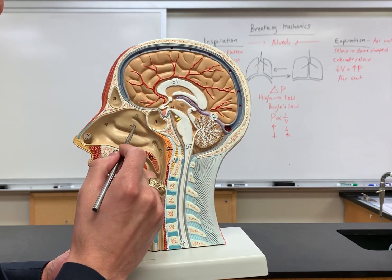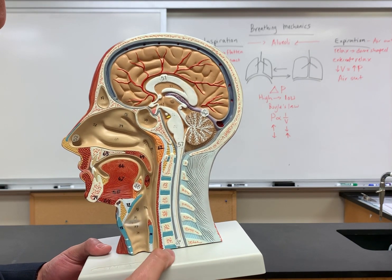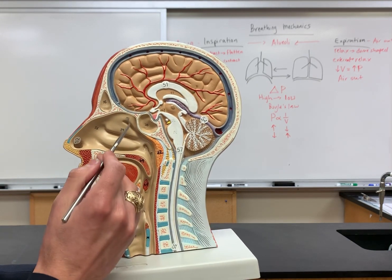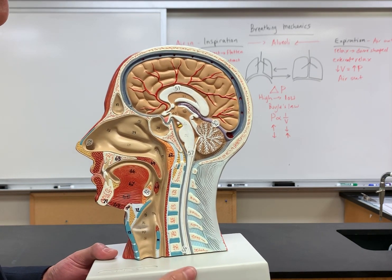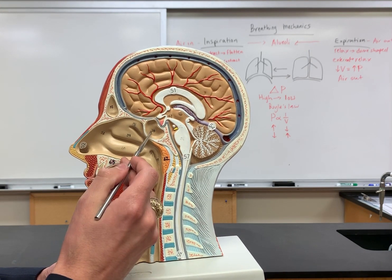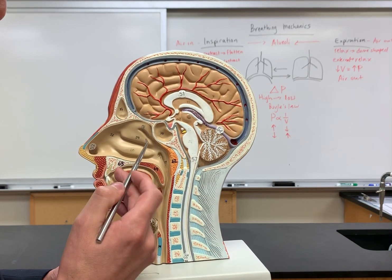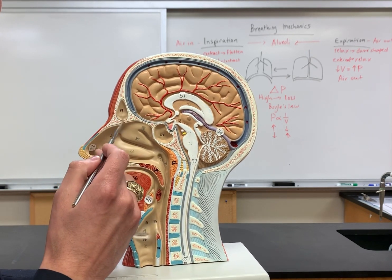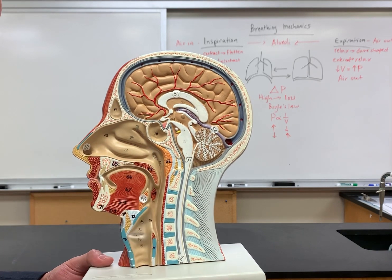All three of these — one, two, and three — those are the concha. So you have superior, middle, and inferior concha. You also have both of these sinuses: this is the frontal sinus, and then this is the sphenoid sinus.